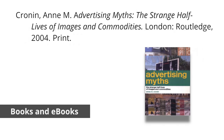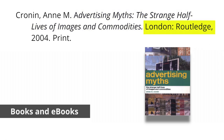MLA book citations follow this format. After the author, the main title of the book is italicized and every major word is capitalized. The location of the publisher is just written as the city. Include the year of publication followed by a period. The format or medium of publication goes last.